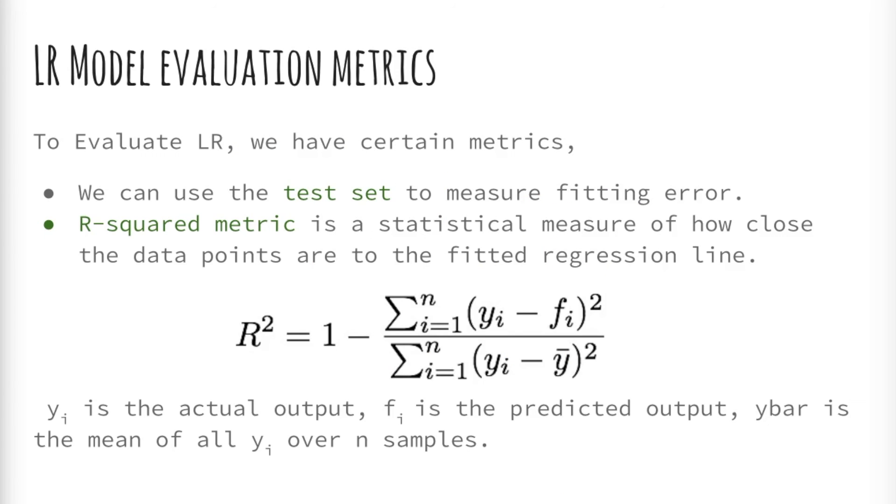A model can be evaluated by many metrics. We can use the test validation sets to see the model response and measure error. There are a few statistical metrics that can be used to scrutinize a model, for example, the R-squared metric. It measures how close the data points are to the regression fit. An R-squared metric of 1 implies that the model fits very well, and as it goes closer to 0, the performance worsens.